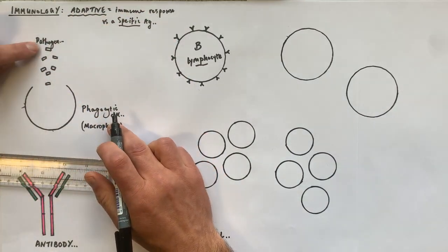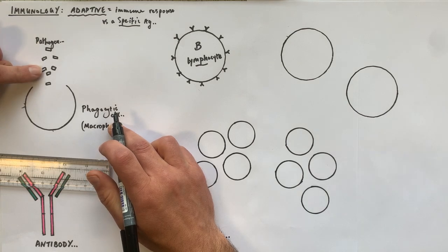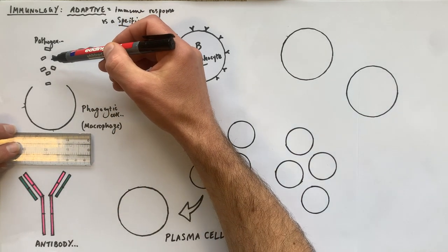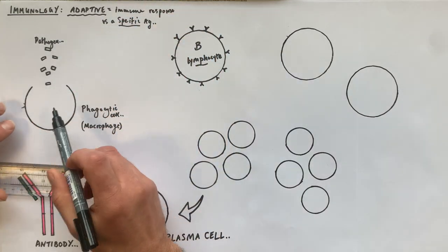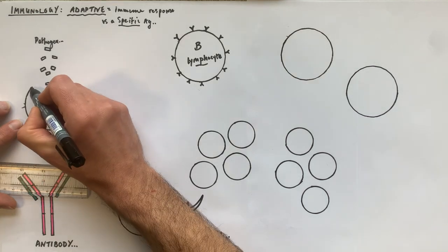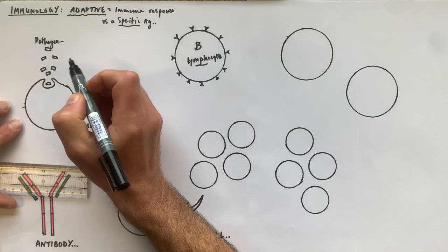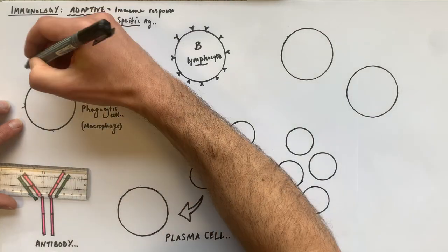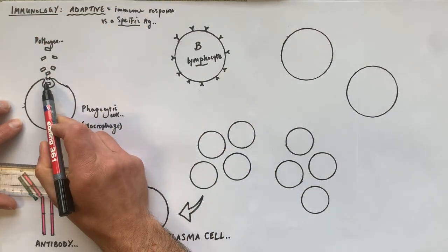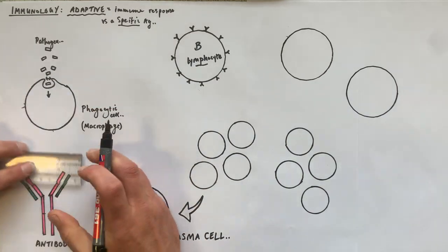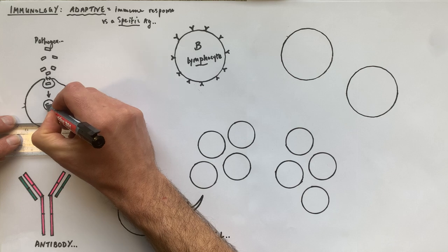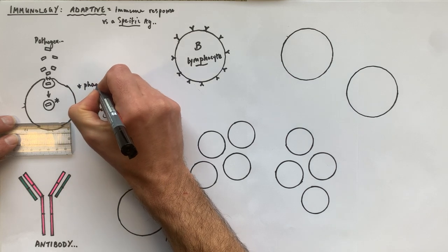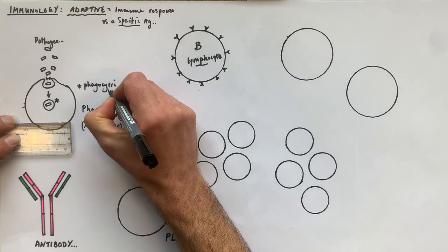Phagocytosis is going to help to clear the pathogens from the site of infection. The cell membrane of the phagocytic cell folds around the pathogen, and as it invaginates the membranes fuse together, so the pathogen is taken inside the phagocytic cell inside a phagocytic vesicle.